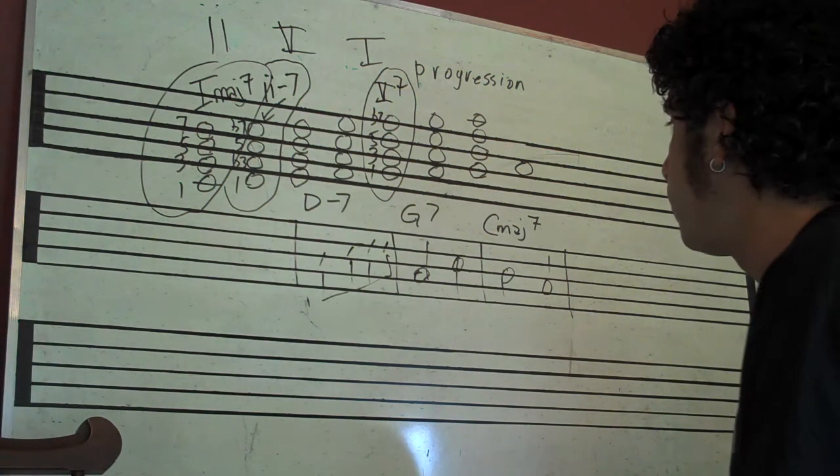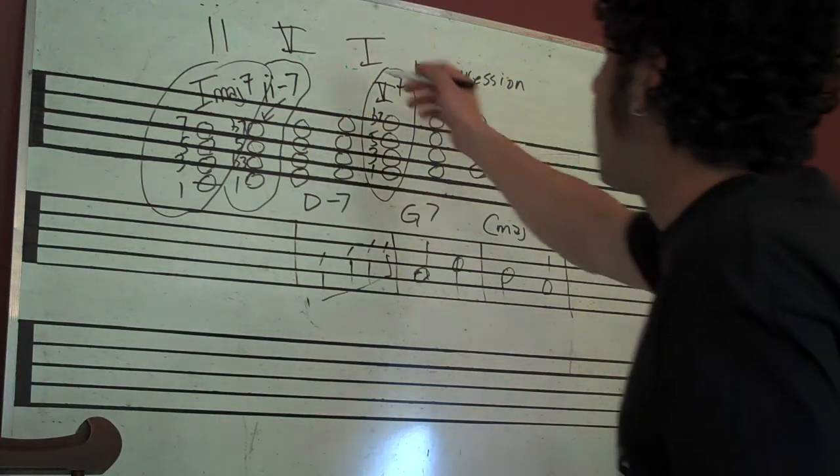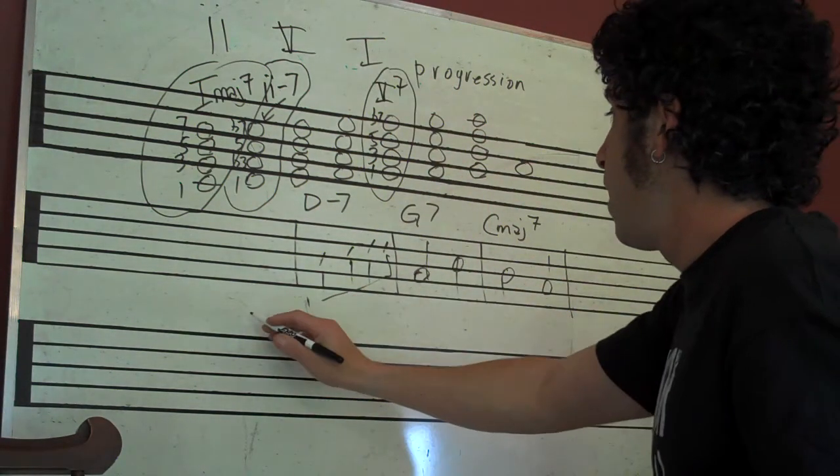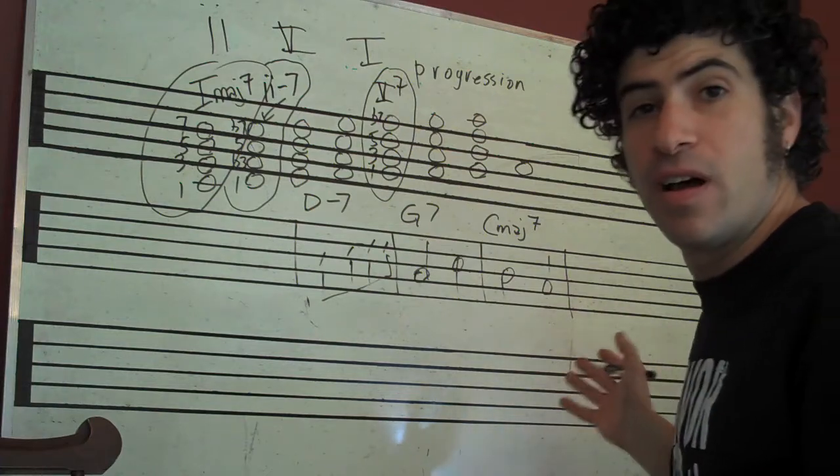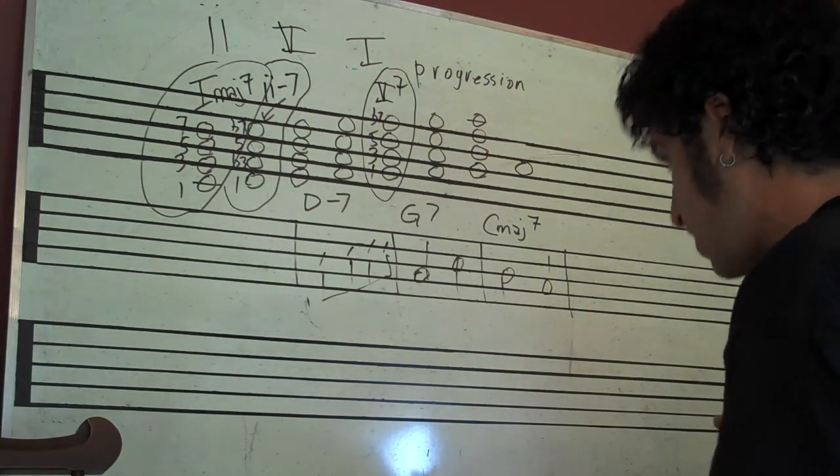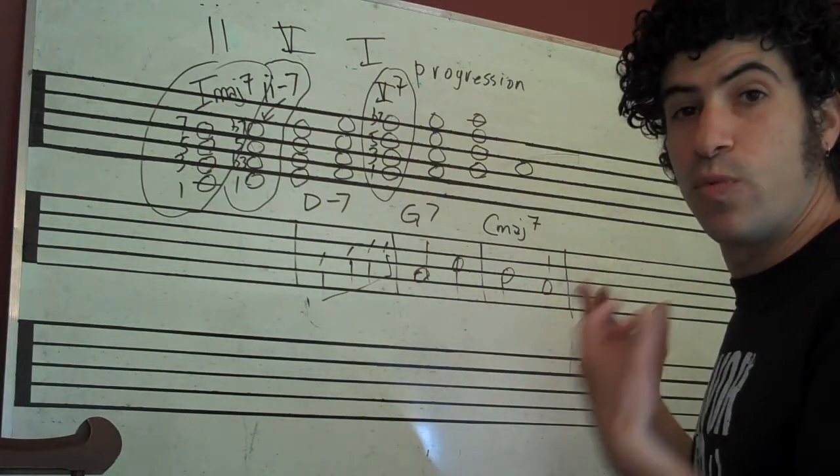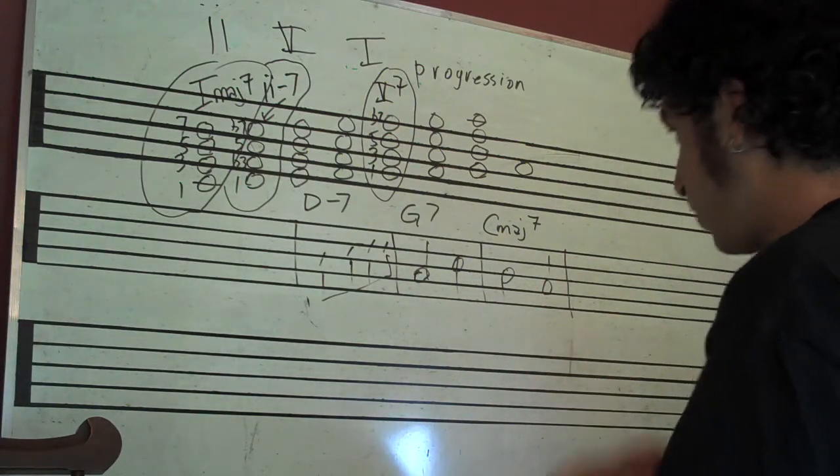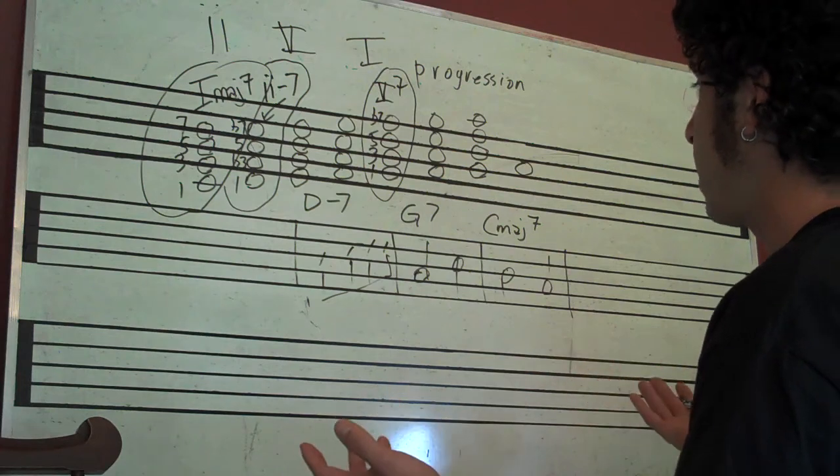So one thing to do would be to write out all your two-five-ones and play them on whatever instrument. It would be really good to play them on piano so you can see.